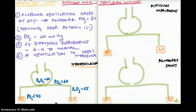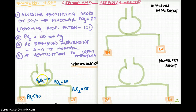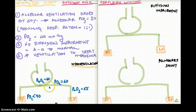Let's talk about hypoventilation. What exactly is ventilation? Ventilation is the exchange of gases between the alveolus and the arteriole. So if there is less ventilation, or if there is hypoventilation, then there is less air coming to the lungs.